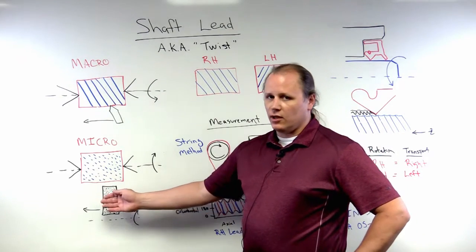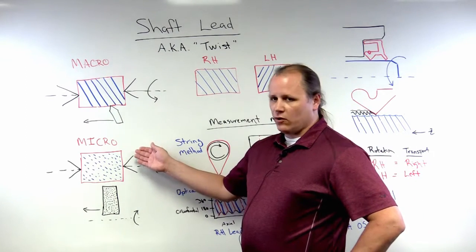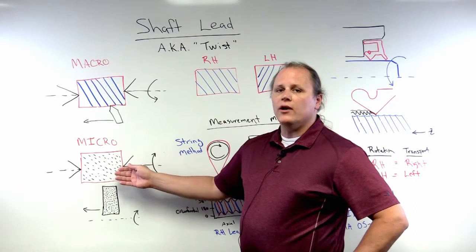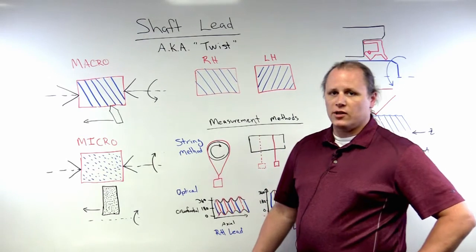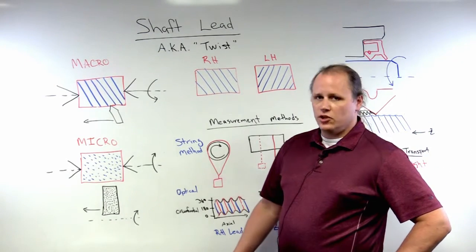The stone is still traversing along the surface of the shaft and it does result in micro lead. The thread-like structures are not continuous, but they do have a deviation from the circumferential direction of the surface of the shaft, resulting in shaft lead.